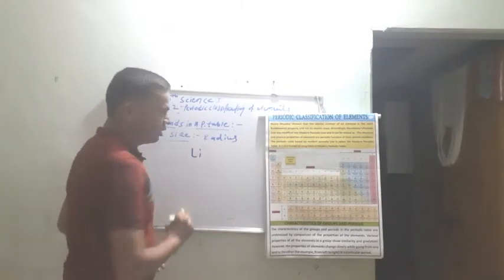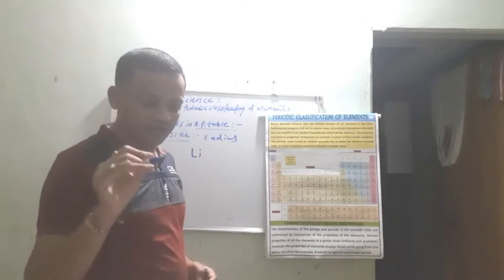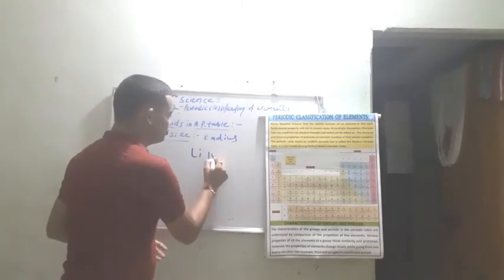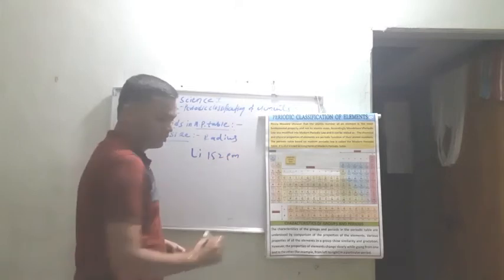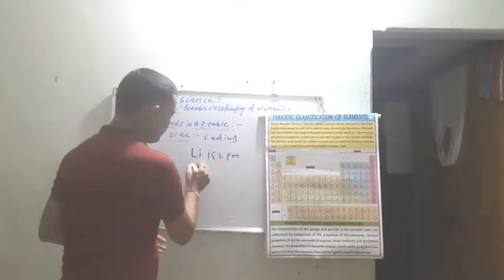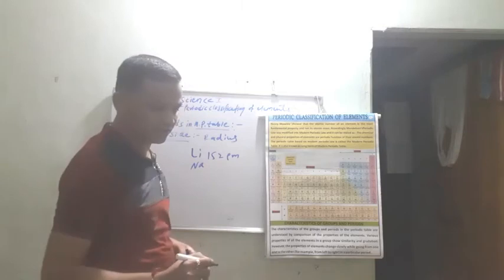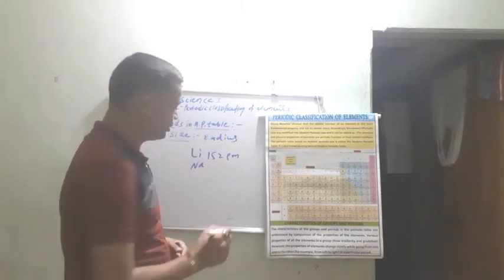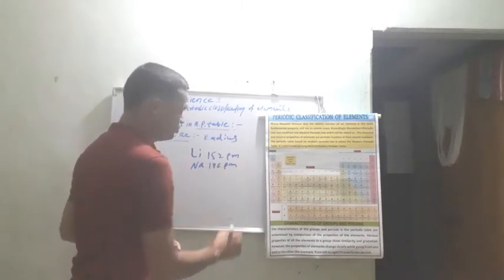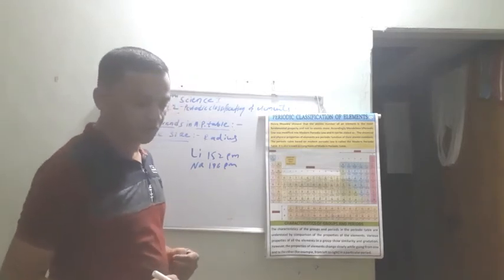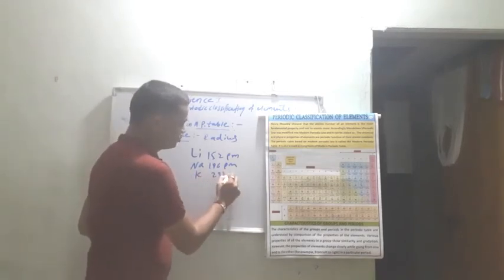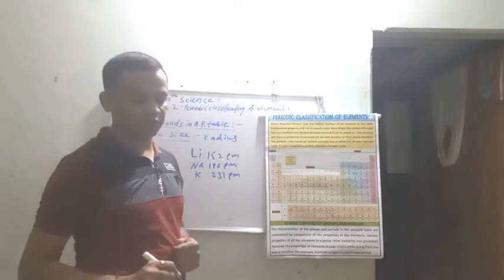Looking at group one elements and their atomic sizes: lithium has an atomic size of 152 picometers, sodium has 186 picometers, potassium has 231 picometers, and rubidium has 244 picometers. So while going downwards in a group, the atomic size goes on increasing, because the number of shells increases and therefore the distance between the nucleus and the outermost shell increases.